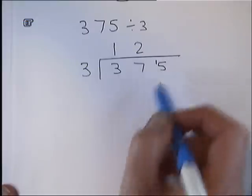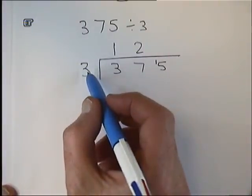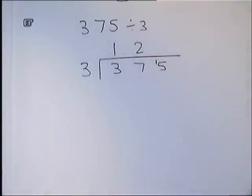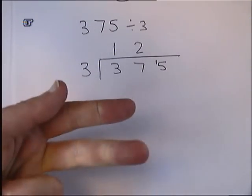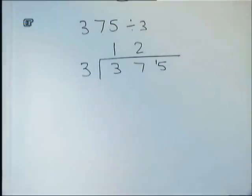The remainder, what's left over, goes here and changes this number into 15. How many times does 3 go into 15? You count up: 3, 6, 9, 12, 15. It goes in five times, no remainder. There's the answer: 125.